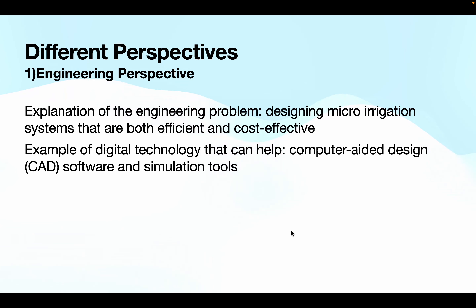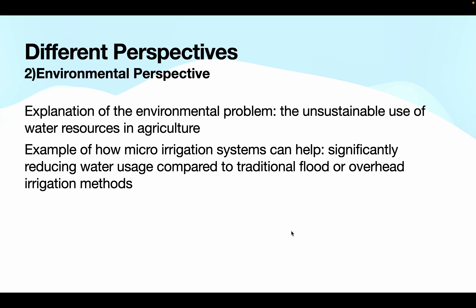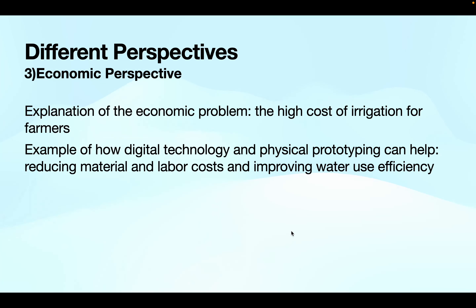From an environmental perspective, the problem facing the irrigation sector is the unsustainable use of water resources in agriculture. Micro irrigation systems can help mitigate this problem by significantly reducing water usage compared to traditional flood or overhead irrigation methods.